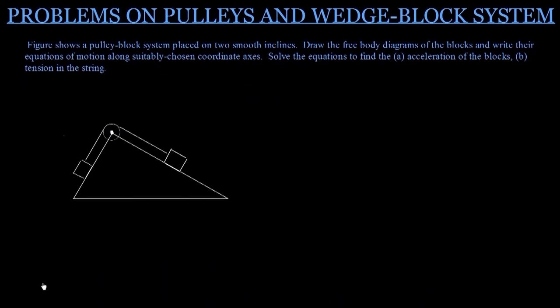This is the question, and I number it one. The question says the figure shows a pulley block system placed on two smooth inclines. We are not considering any frictional force until now in our lecture, so it's smooth inclines.